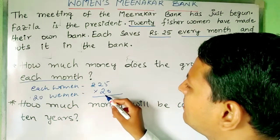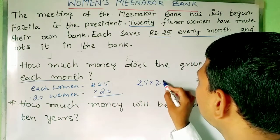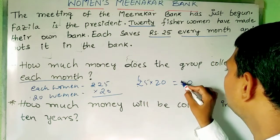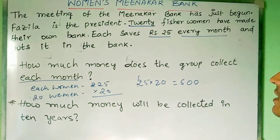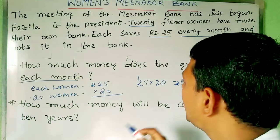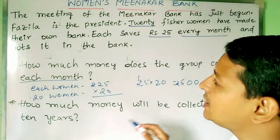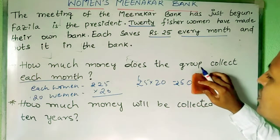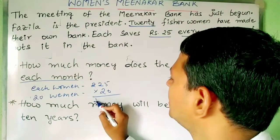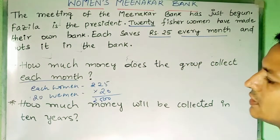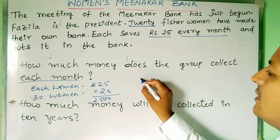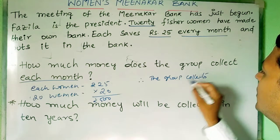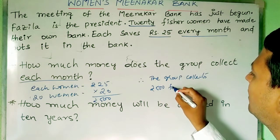So we simply multiply 25 by 20. When 25 is multiplied by 20: 5 twos are 10, two twos are 4 plus one carried over makes 5, and there is one zero from 20. So 25 × 20 = 500. Therefore the group collects ₹500 per month.